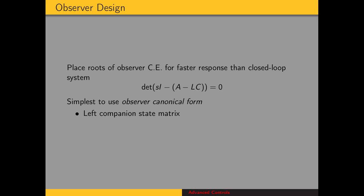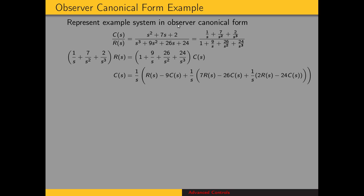Now we're going to look at an example of putting a system into observer canonical form. Here's the transfer function for a given system, and we want to put it into observer canonical form. The first step is to divide both the numerator and denominator by the highest power of S, giving us 1/S plus 7/S² plus 2/S³ in the numerator and the corresponding denominator terms. The next step is to cross-multiply, so C times the denominator equals R times the numerator. Now we want to group like terms — terms that have the same power of S — factoring out the 1/S, 1/S², and 1/S³ terms, and then solve for C(S).